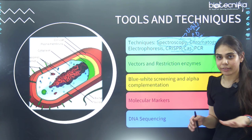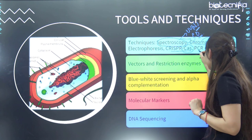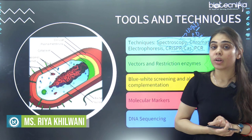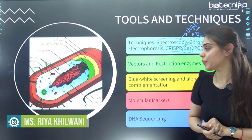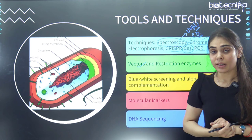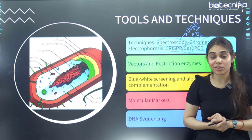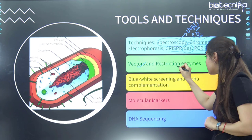Next is PCR and its modifications. Like what is the function of hot start PCR — you should know that. Then we have vectors: what are the different kinds of vectors, which vectors are used for protein expression, what are the restriction enzymes and their classes. The most frequently used restriction enzyme is Type 2.